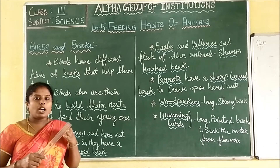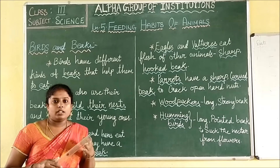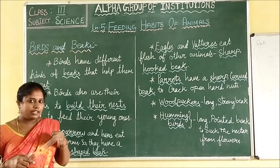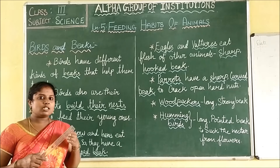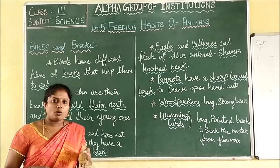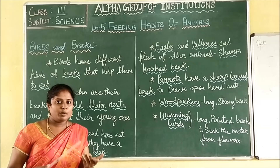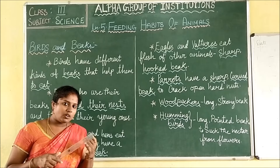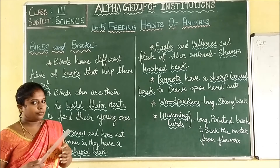And then carnivores. Carnivores means the animal which eats only the flesh of other animals. You will only eat the flesh of other animals. What is the example of carnivores? Human beings eat both plants and flesh of other animals. And crow and hen — these are examples of omnivores.